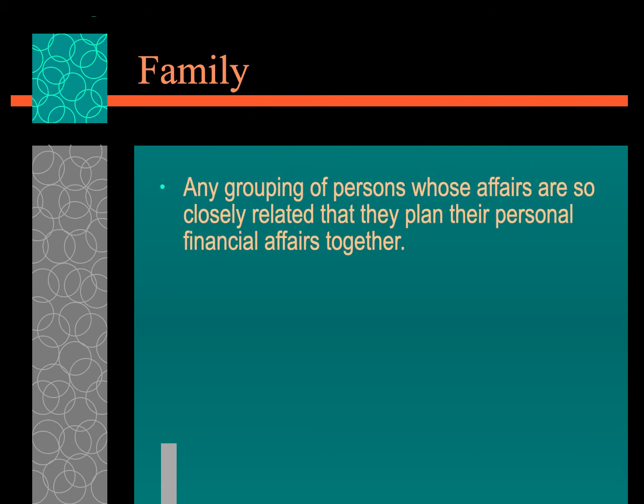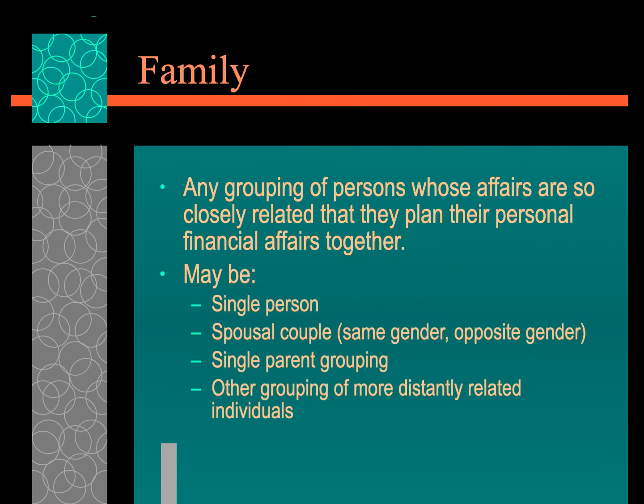The family, under the law, is any grouping of persons whose affairs are so closely related that they plan their personal financial affairs together. That's one reason why family law is connected to civil law. A family may be a single person, a spousal same-gender or opposite-gender unit, a single-parent grouping, or other groupings of more distantly related individuals — the extended family type of unit.